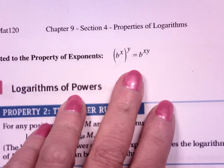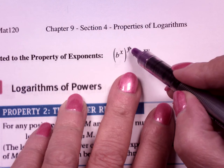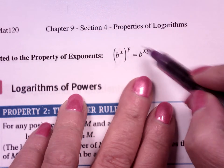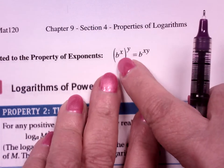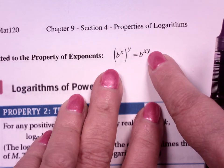It's related to this property of exponents that says b to the x to the y power is b to the x times y. So if I've got an exponent raised to an exponent, you multiply the two exponents.